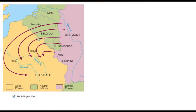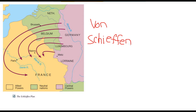One reason Germany was pushing Austro-Hungary so hard to go to war with Serbia is that they had a plan to deal with both France and Russia — the von Schlieffen Plan. It was a plan that German military leaders had devised to deal with the possibility of a two-front war. Germany knew it could not survive a two-front war, but they believed they could if they quickly defeated France and then redeployed all their troops east to deal with Russia, since Russia was slower to mobilize.